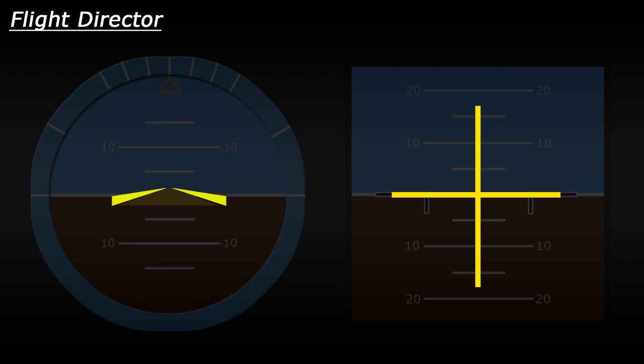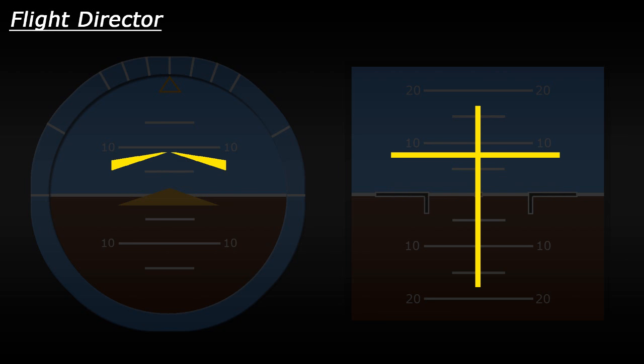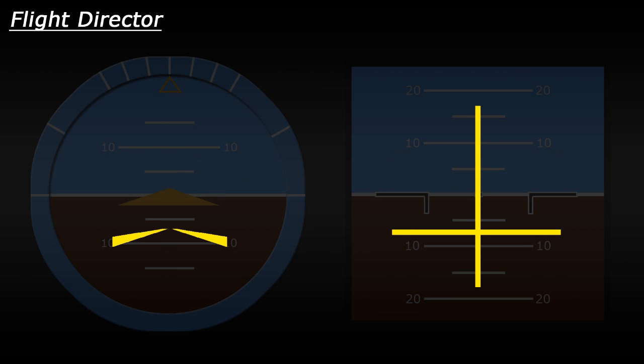If a plane needs to climb, you'll notice there is an upward movement on both Flight Directors. This is basically indicating to the pilot to pitch the plane upwards to climb. You'll notice on the right side that the horizontal bar represents the pitch. Opposite to that, if the plane needs to descend or lose altitude, there is a downward movement from the Flight Directors, telling the pilot to pitch the nose of the plane down.